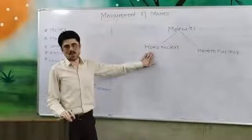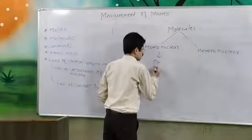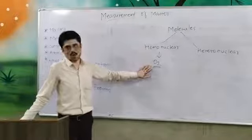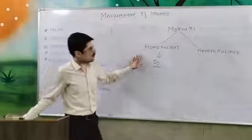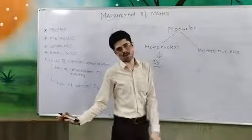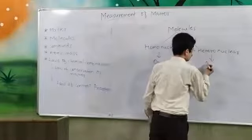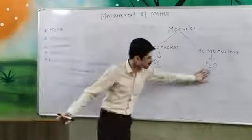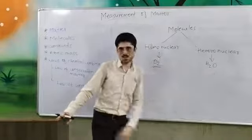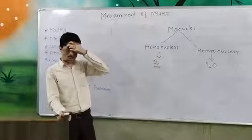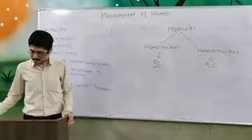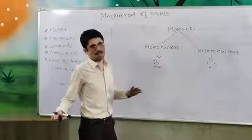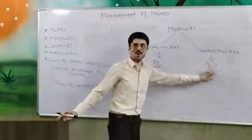The example of homonuclear molecules is O2. It is an oxygen molecule and this molecule is made up of two atoms of oxygen. Similarly we have one other type of molecule, that is heteronuclear molecule. The example of heteronuclear molecule is H2O. As we can see, H2O is a combination of two atoms of hydrogen along with one atom of oxygen. So these are the types of molecules, and we have defined molecules as combinations of atoms. These atoms may belong to the same element or they may belong to different elements also.